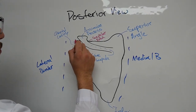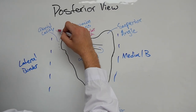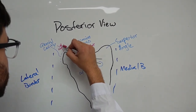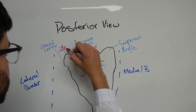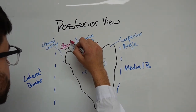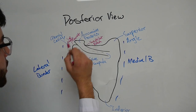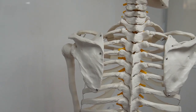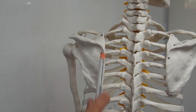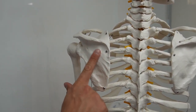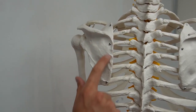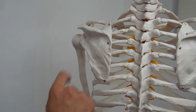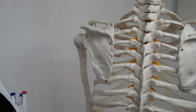You've got the superior glenoid tubercle and the inferior glenoid tubercle. So now you've got the general format of the scapula. Now we're going to get into the fossa, which is the indent of the scapula. You've got the infraspinous fossa and then you've got the supraspinous fossa.